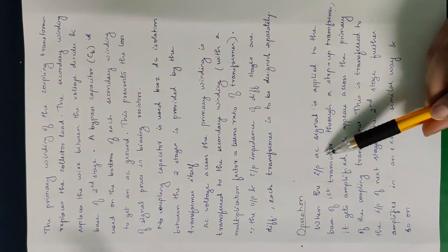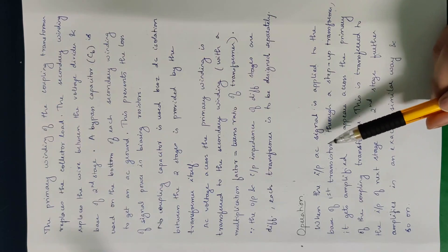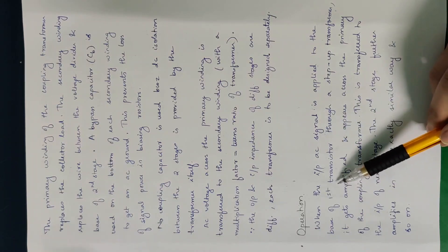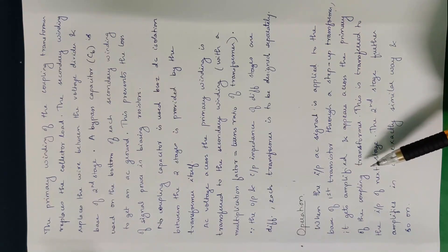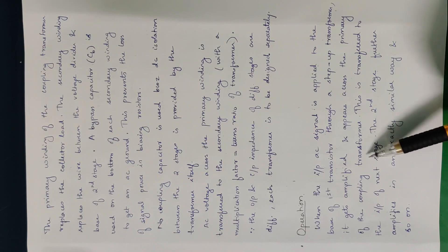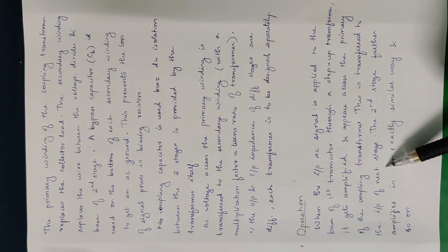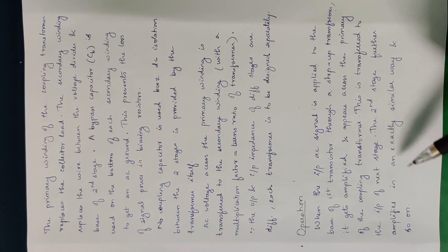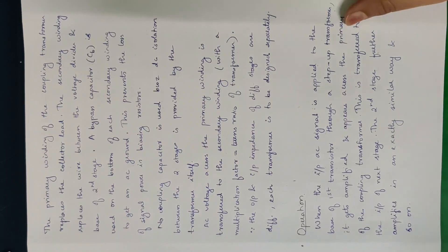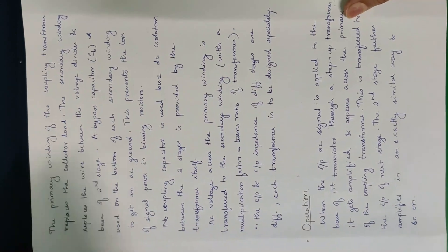Step-up transformer → input AC signal → base of first transistor → amplified → appears across primary winding of coupling transformer → transferred to second stage. The process repeats. This is the working of the transformer-coupled amplifier.